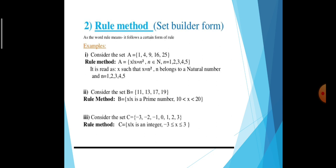Another example for set builder form, also called rule method — it follows a rule or property. Consider the set A = {1, 4, 9, 16, 25}. Observe: 1²=1, 2²=4, 3²=9, 4²=16, 5²=25. So the set builder form is A = {x : x = n², n ∈ ℕ, n = 1, 2, 3, 4, 5}.